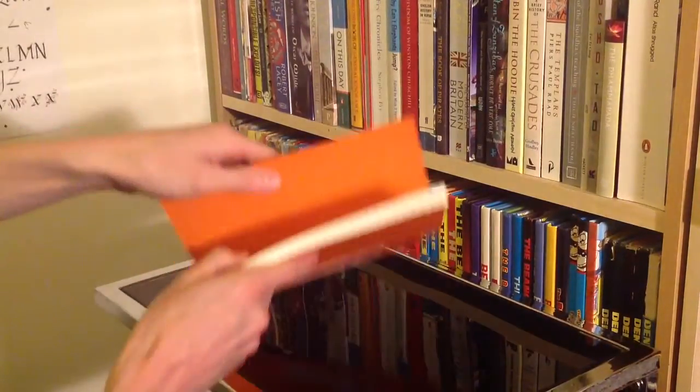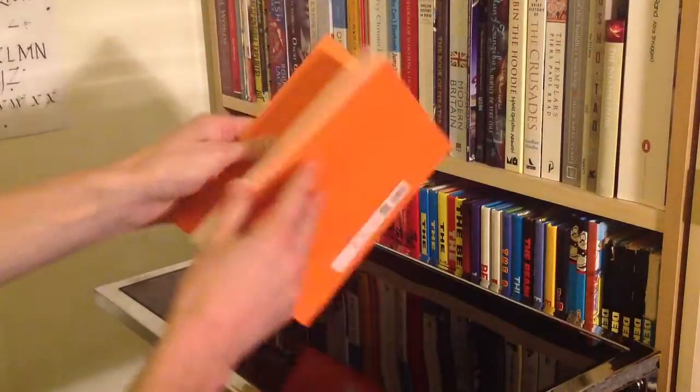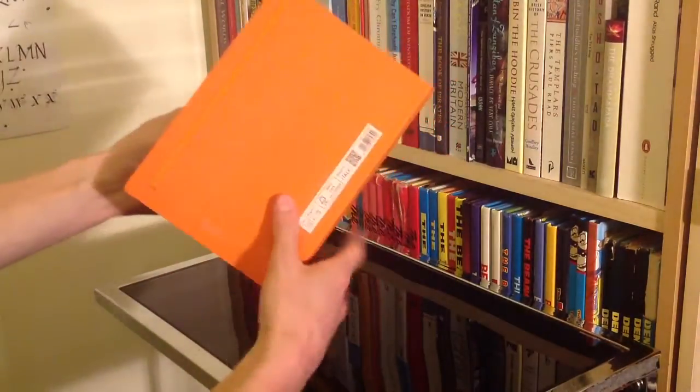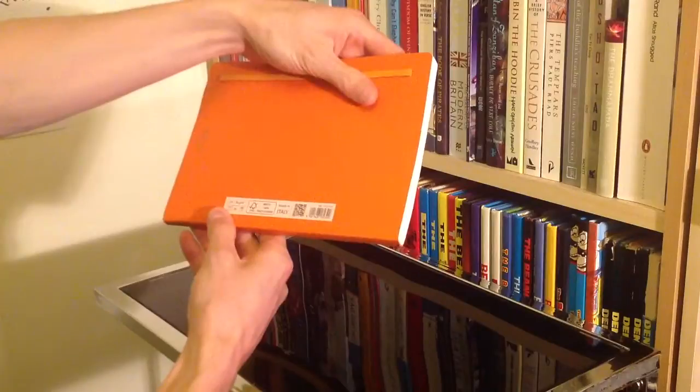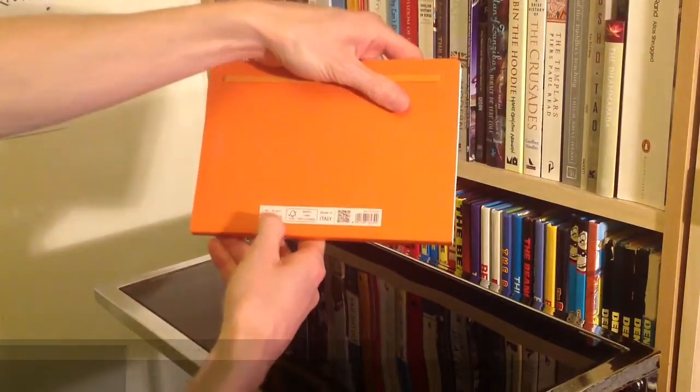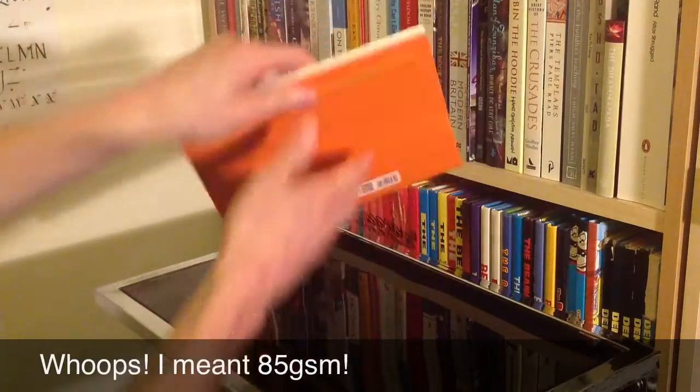It's nice and smooth and very slightly off-white, not pure bright white. I think it says on the side 80 grams per square meter.